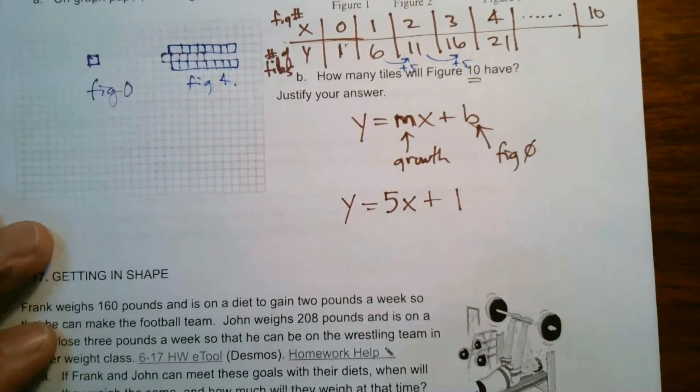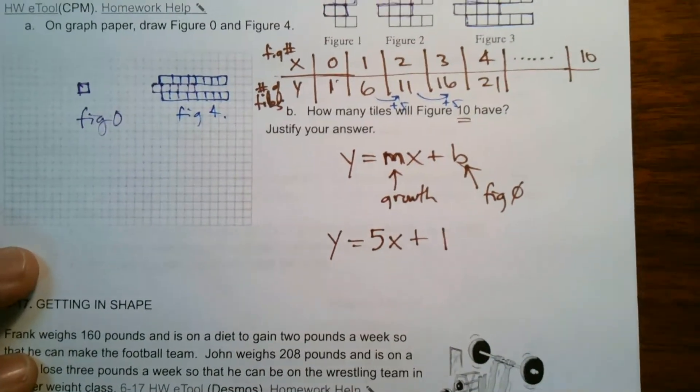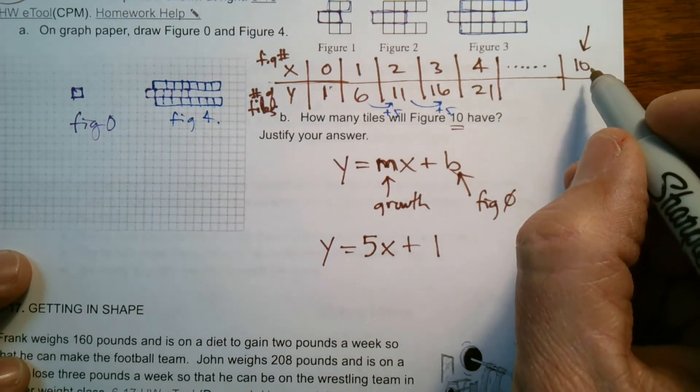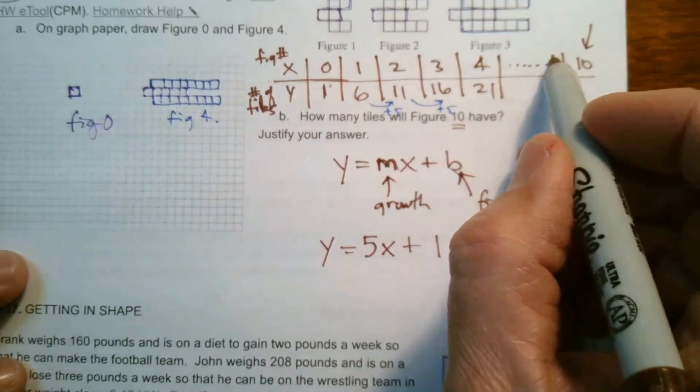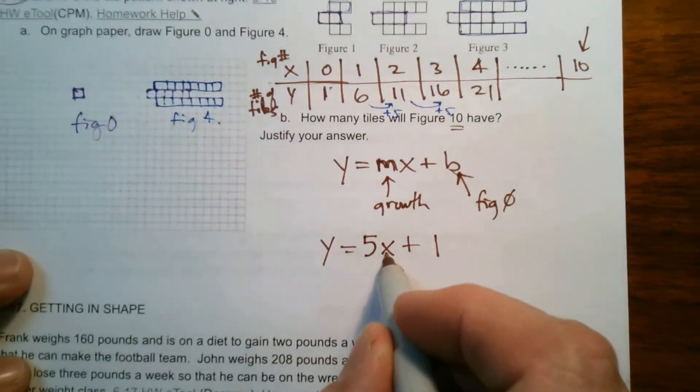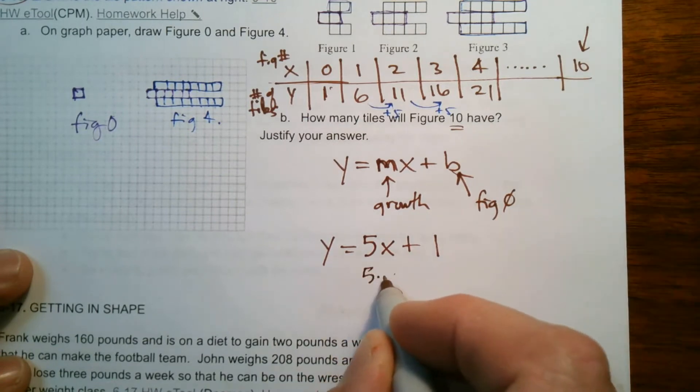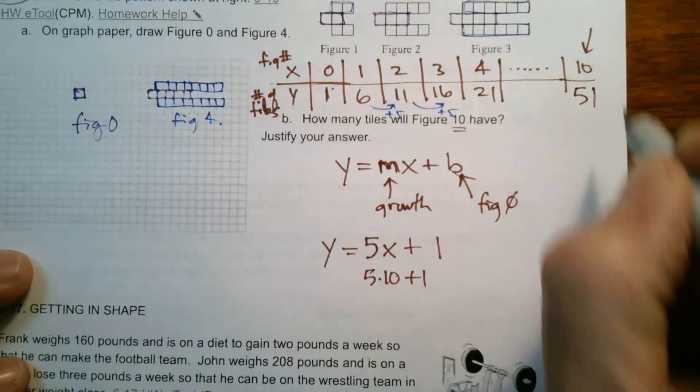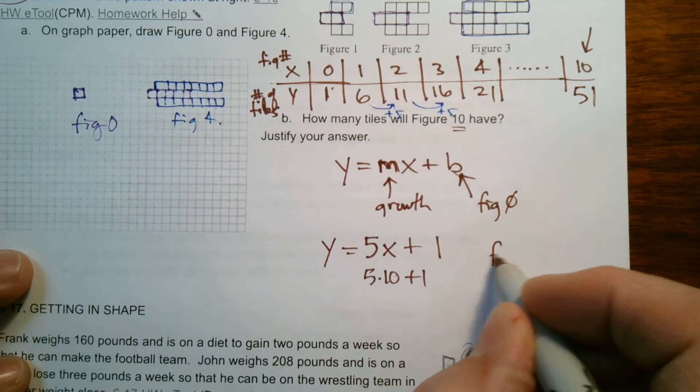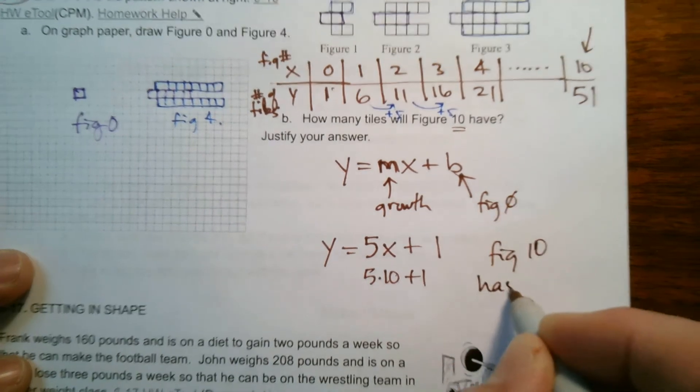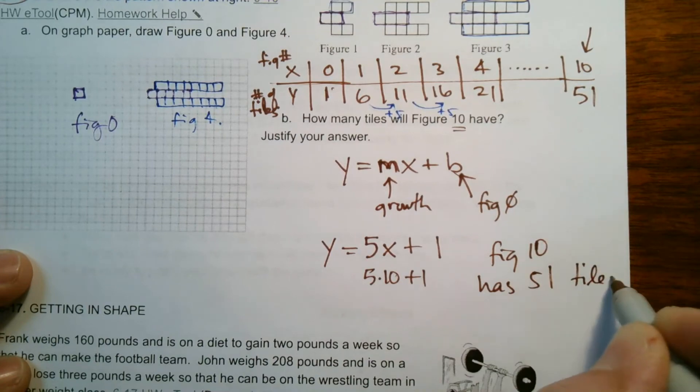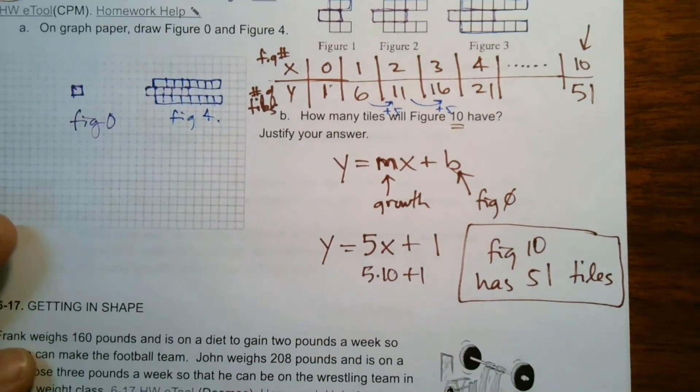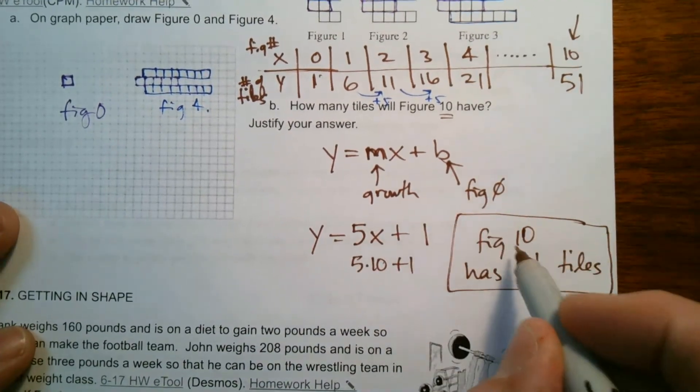So that's the rule for this pattern. If I want to know how many tiles in Figure 10 - Figure 10, remember, is my figure number. So I put that 10 in place of that x there. So I could just go 5 times 10 plus 1. 5 times 10 is 50, plus 1 is 51. So Figure 10 has 51 tiles. And my justification - you could have used the table to justify, or in my case here, I used the rule to justify.